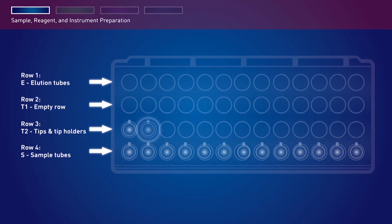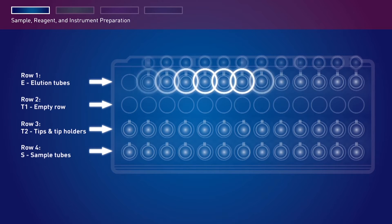In row T2, third row, load Automate Express system tips inserted into tip holders. Leave row T1, second row, empty. Row E, first row, load with labeled PrepSeek kit elution tubes with the caps open and secured as shown here.